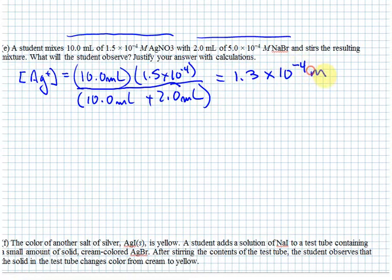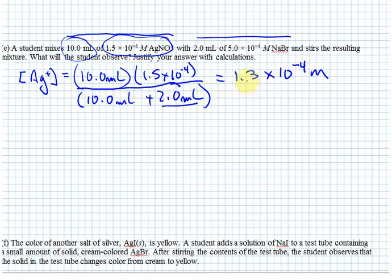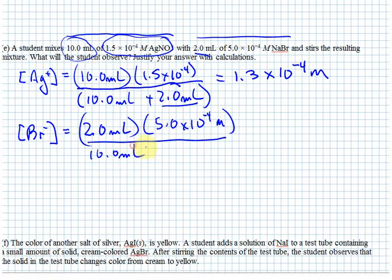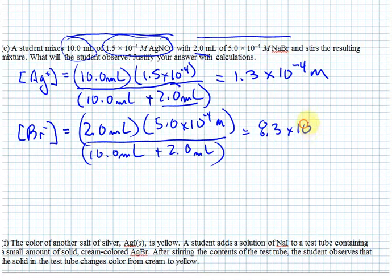To be clear: we take the volume of the solution added, multiplied by its original molarity, and divide by the total volume — since volumes are additive, that's 12 mL. The silver ion is diluted to 1.3×10⁻⁴ molar. For the bromide ion: we have 2 mL of the sodium bromide solution at 5.0×10⁻⁴ molar, also diluted to the total 12 mL volume, giving a bromide ion concentration of 8.3×10⁻⁵ molar.